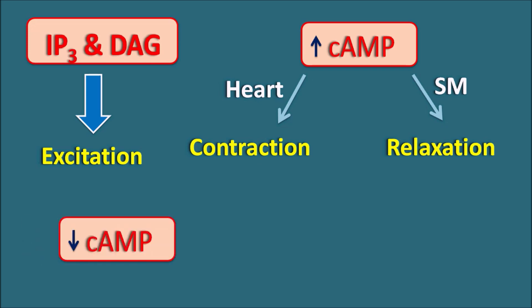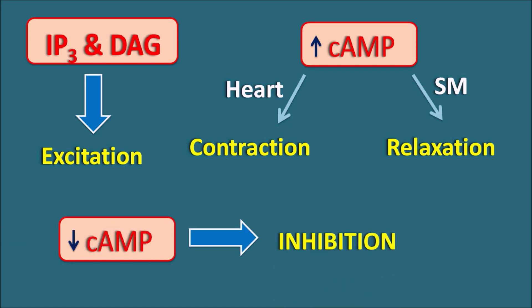When cyclic AMP levels are going to be decreased, it produces an inhibitory response, because cyclic AMP can increase calcium which is responsible for activation of the postsynaptic membrane. If we remember the physiological roles of these secondary messengers, we can easily understand the functions of the adrenergic receptors. There is no receptor associated with decreased levels of IP3 and diacylglycerol, because IP3 and diacylglycerol are always activated by G-protein coupled receptors.